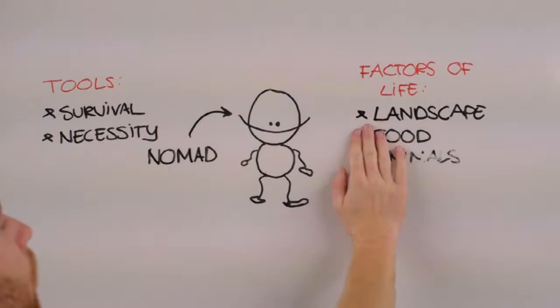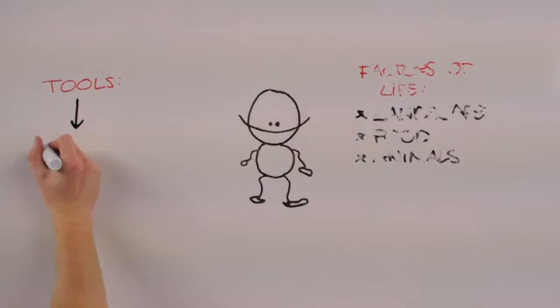When civilizing, these factors of life model and shift towards the background. The value of a tool is not in the purpose of the tool anymore, but the object itself holds the value.